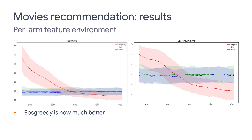In this case, the epsilon greedy method with a neural network performs the best. While the linear methods seem to have trouble finding the relationship between actions and rewards. The point here is that you should try out different agents and hyperparameters for the Bandits library to get the best results, just as you would do in any other machine learning projects.